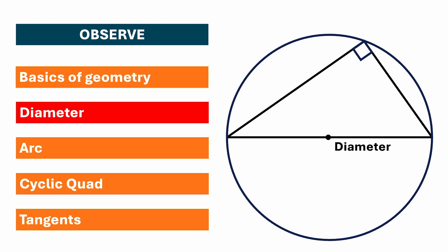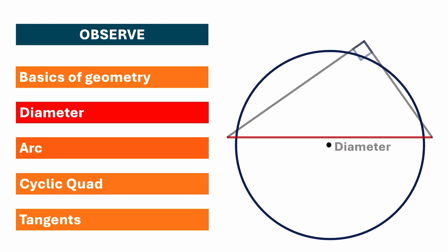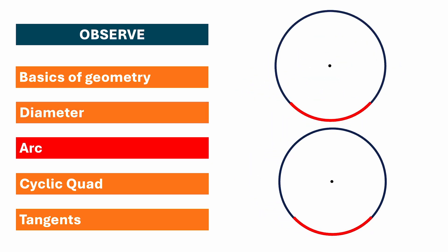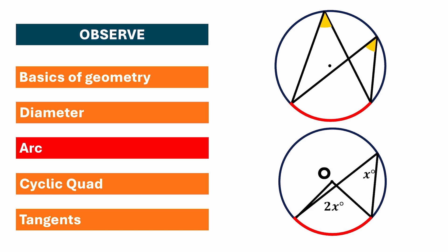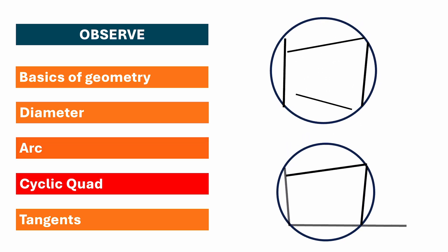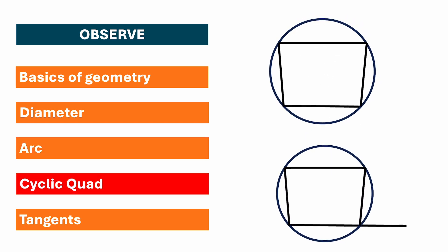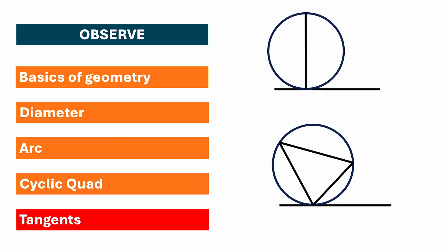If diameters are present in the diagram, then the angle in a semicircle will be 90 degrees. There are two properties dependent on arcs: angles in the same segment are equal, and the angle at the center is twice the angle at the circumference. For cyclic quadrilaterals, opposite angles are supplementary and the exterior angle equals the opposite interior angle. For tangents: the angle between the tangent and the radius is 90 degrees, and angles in alternate segments are equal.